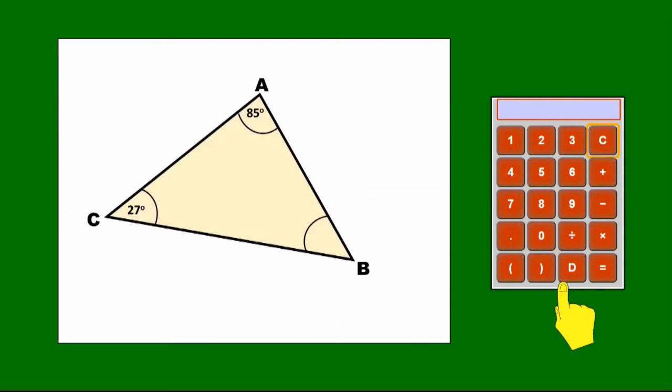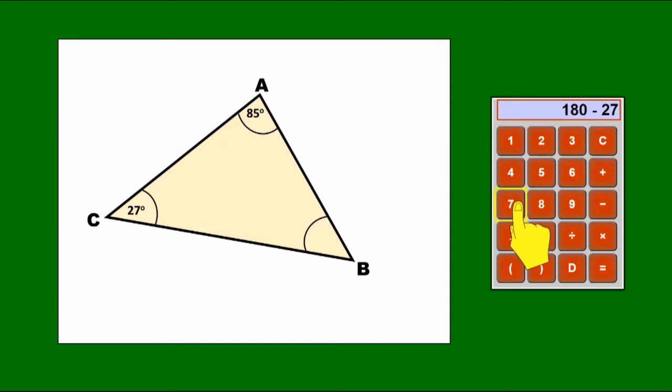Okay, so here's another example. Just the same idea. And let's do this one on the calculator. 180 minus 27 minus 85 equals 68. So the missing angle must be 68 degrees.